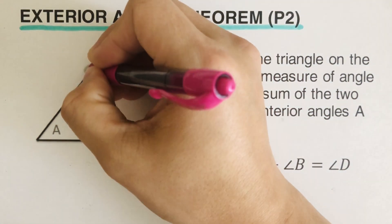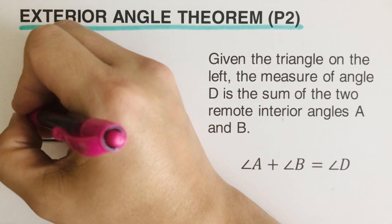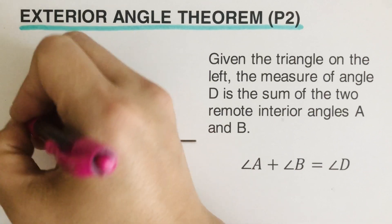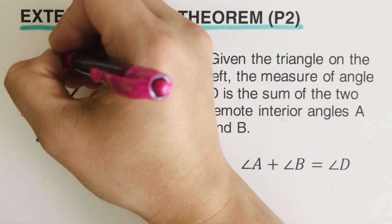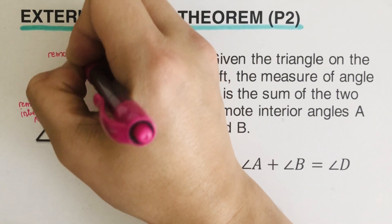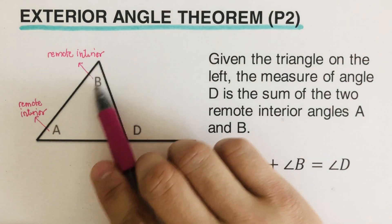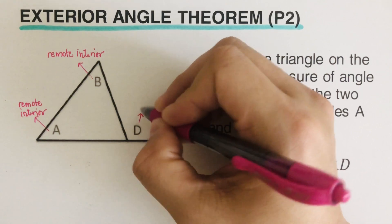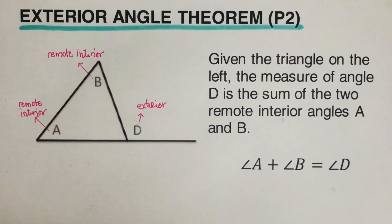So this angle B right here and this angle A are called the remote interior angles. So this is remote interior angle, and then this one right here is also remote interior angle. Interior means they are inside the triangle. This one right here is the exterior angle because it is located on the outside.